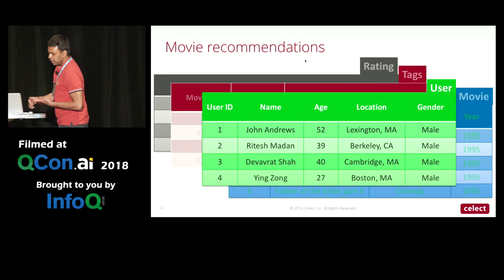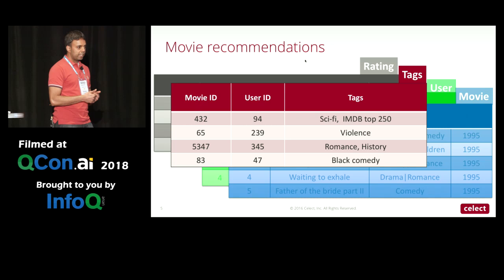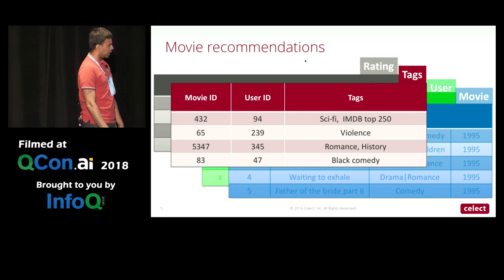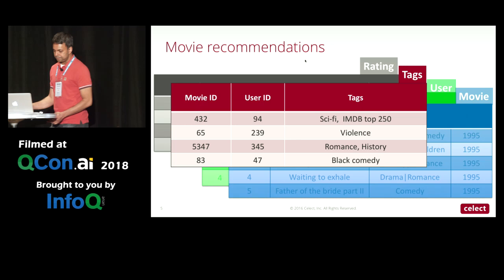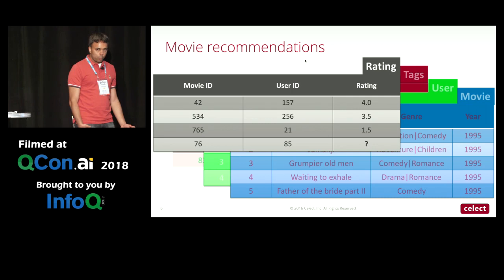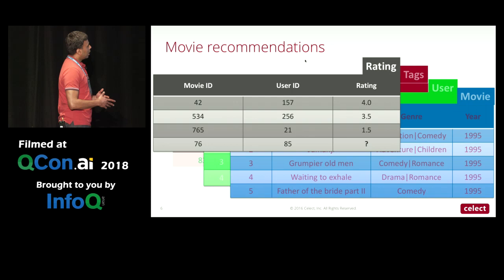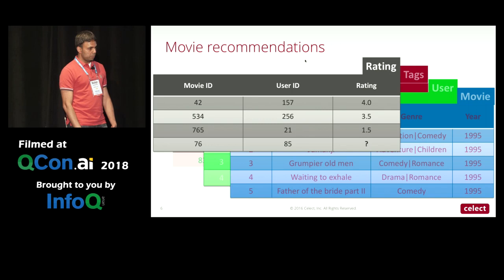Tags and ratings are a bit different — they are both interactions in that they involve both a movie and a user. A tag is something any user who watches a movie can give that movie; it can be random text, such as genre descriptions or actor names. Ratings are what we really want to predict. The ratings data is typically very sparse — not all users have seen all movies — and the task is to predict a rating for a movie-user pair where we don't have one in the system.